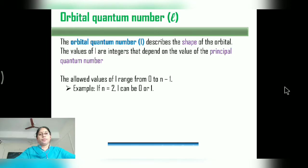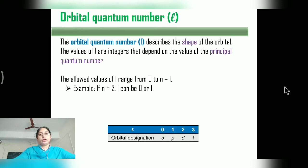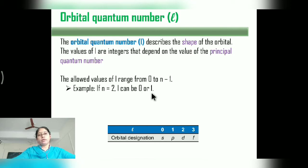For example, if N is equal to 2, then L can be 0 and 1.